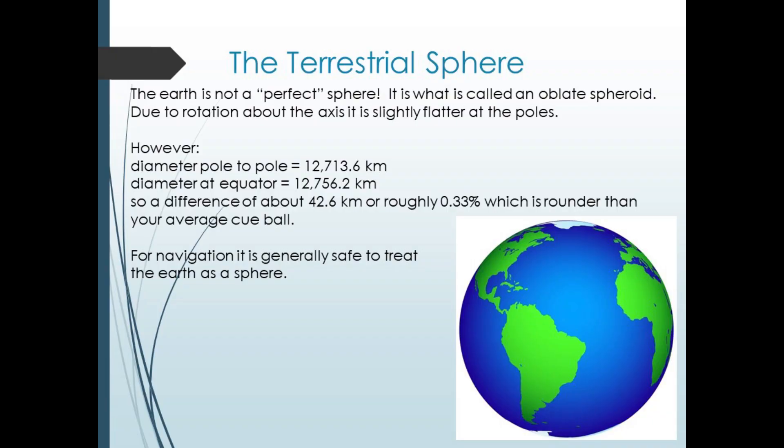We should start by acknowledging that the Earth is not a perfect sphere. Because of its rotation, it's slightly wider at the equator, but the difference is only about 0.33%, which is rounder than your average cue ball. So for our purposes, we're going to treat it as if it's an exact sphere.